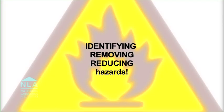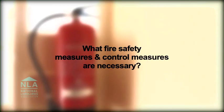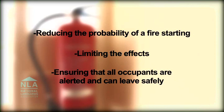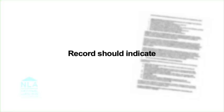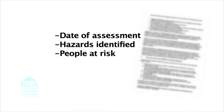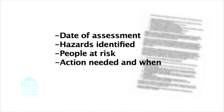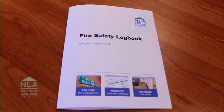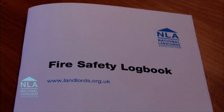This will encompass identifying fire hazards and people at risk. You will need to determine what fire safety measures and control measures are necessary to ensure the safety of people in the building should a fire occur, by reducing the probability of a fire starting, limiting the effects should a fire occur, and ensuring that all occupants are alerted and can leave the premises safely in the event of a fire. The record should indicate the date the assessment was made, the hazards identified, any people especially at risk, what action has been and still needs to be taken and by when, and the conclusions arising from the assessment.